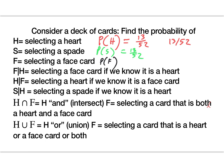How many face cards are there? 12 — Jack, Queen, and King in each suit. So Jack, Queen, King of spades, clubs, diamonds, hearts: 3, 6, 9, 12. There are 12 face cards out of 52.